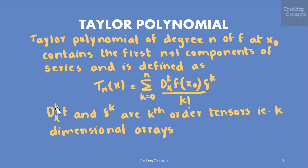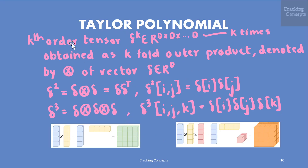Note that the kth derivative of f with respect to x and δᵏ are kth order tensors — that is, they are k-dimensional arrays. The kth order tensor δᵏ ∈ ℝ^(d×d×…×d) (k times) is obtained as a k-fold outer product of the vector δ ∈ ℝᵈ. For example, δ² is the outer product δδᵀ, so (δ²)ᵢⱼ = δᵢδⱼ. Similarly, δ³ is the outer product of δ, δ, and δ, so (δ³)ᵢⱼₖ = δᵢδⱼδₖ. The figure here visualizes two such outer products.